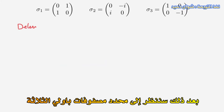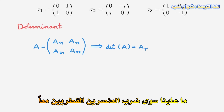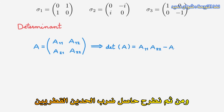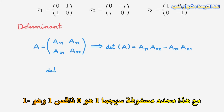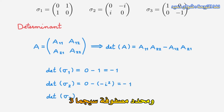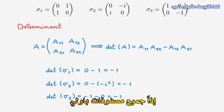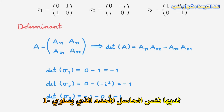Next, we're going to look at the determinant of the Pauli matrices. For a general 2x2 matrix A, the determinant is really easy to calculate. We just multiply the two diagonal elements together, and then subtract the multiplication of the two off-diagonal terms. The determinant of the sigma-1 matrix is 0 minus 1, which is minus 1. The determinant of the sigma-2 matrix is 0 minus minus i squared, which is minus 1. And the determinant of the sigma-3 matrix is minus 1 minus 0, which is also minus 1. So all Pauli matrices have the same determinant, which is minus 1.